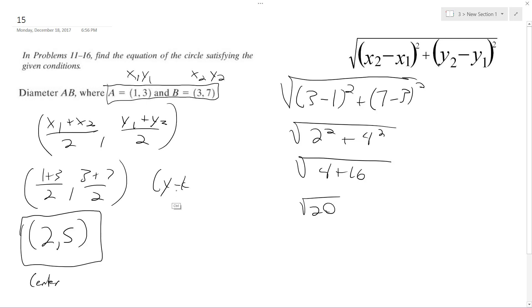I'm going to have x minus h squared plus y minus k squared equals r squared. So I'm going to have x minus 2 squared plus y minus 5 squared equals square root of 20 squared, which is just 20. And that's it. This is the final solution. Thanks for watching.